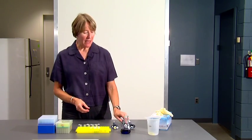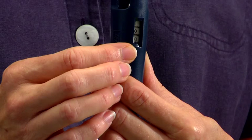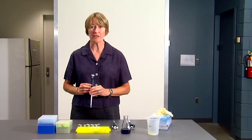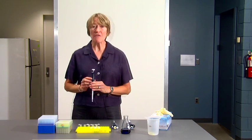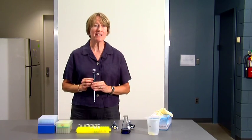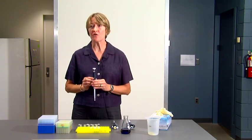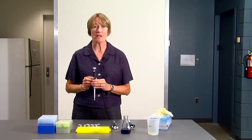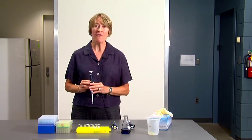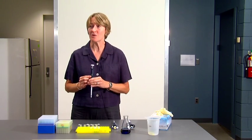Each of the pipetters has a series of three numbers on the barrel. And this is how you set the volume that you want to use. Some of the numbers are black, and some will be red. The red numbers indicate that you have to be alert. We'll start with the P200 first, because that's the easiest one to set.